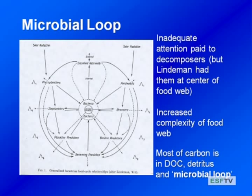Today we're going to talk more about the microbial loop — the tiny decomposers, the microorganisms in the food web. A lot of these things weren't studied historically because it was hard to do. Ray Lindeman, who developed ideas of trophic levels, had already put bacteria and ooze and detritus right in the middle of his early food web diagram. But after the 1940s, there was about 50 years of largely ignoring the microbial loop. Understanding the microbial loop has really increased our understanding of food web complexity.